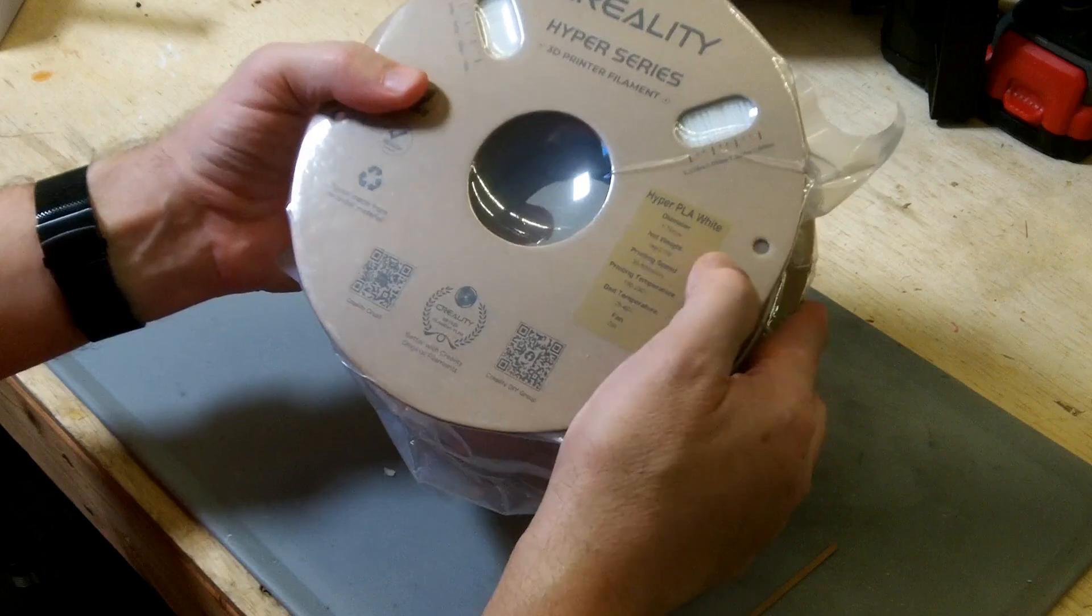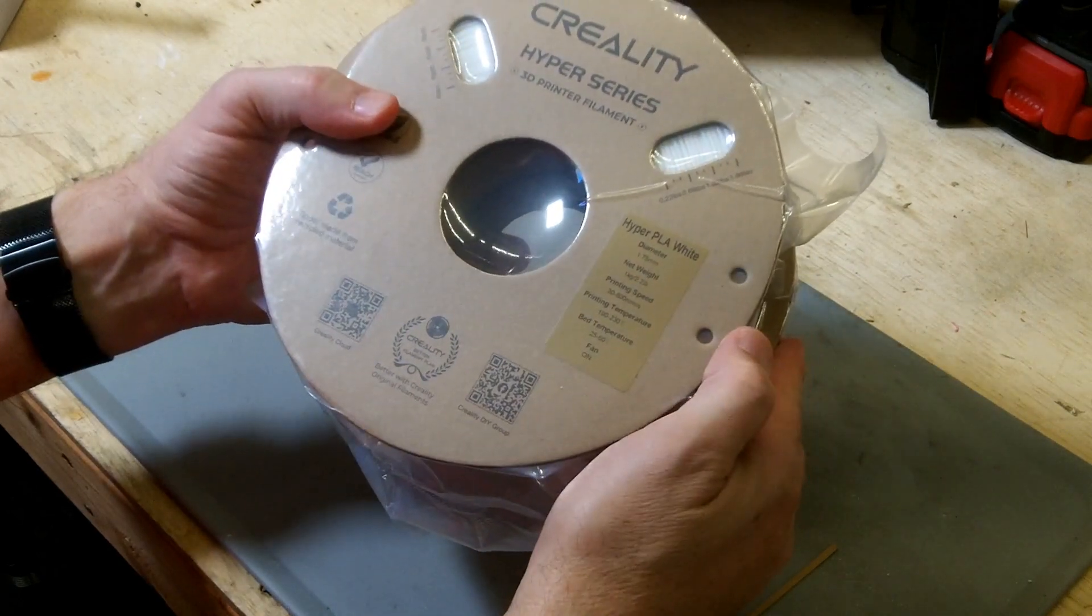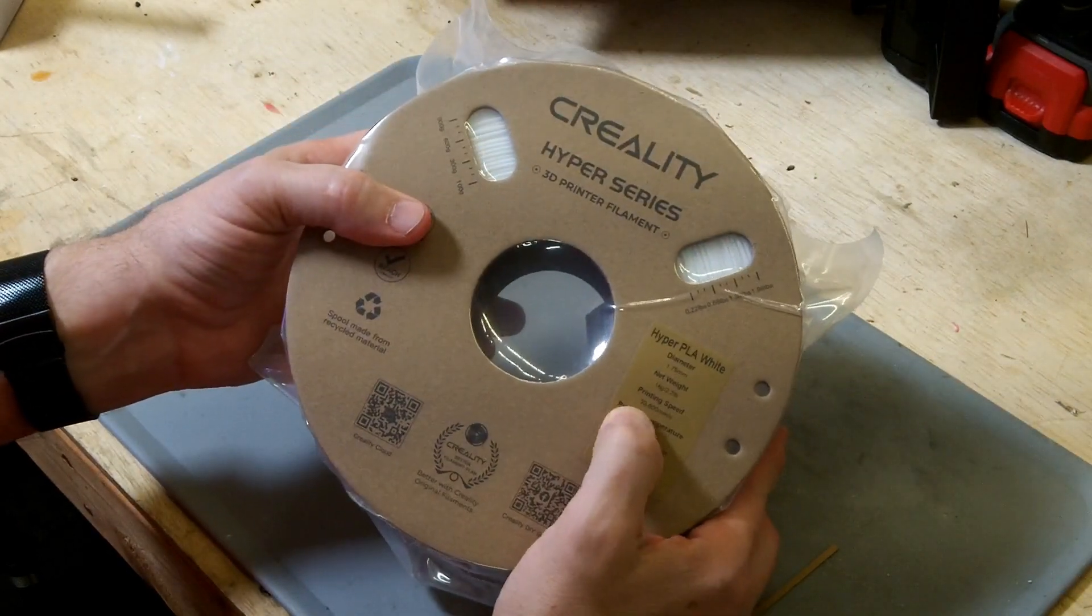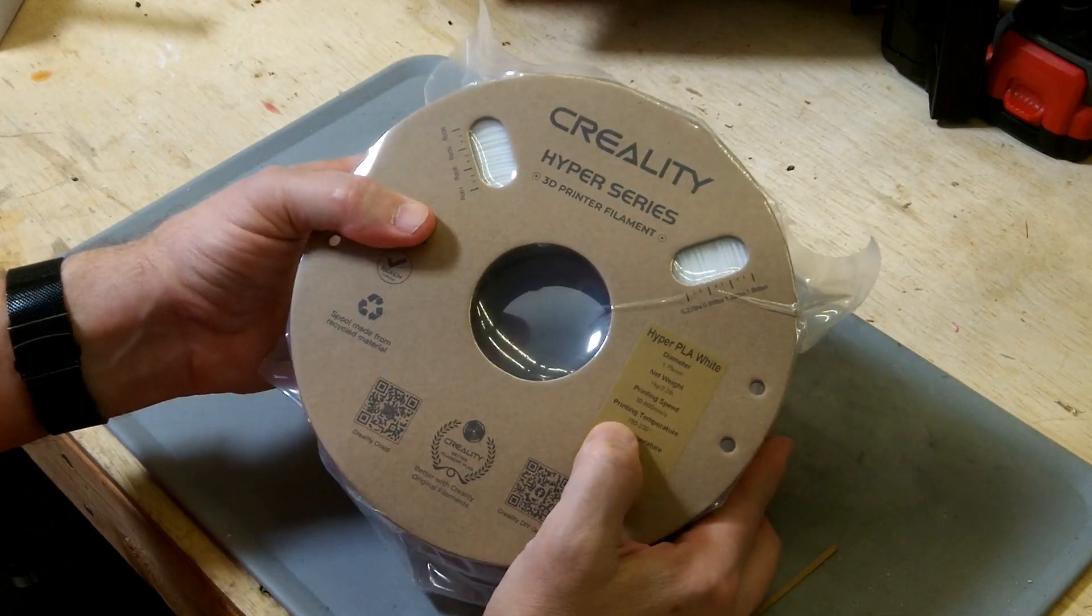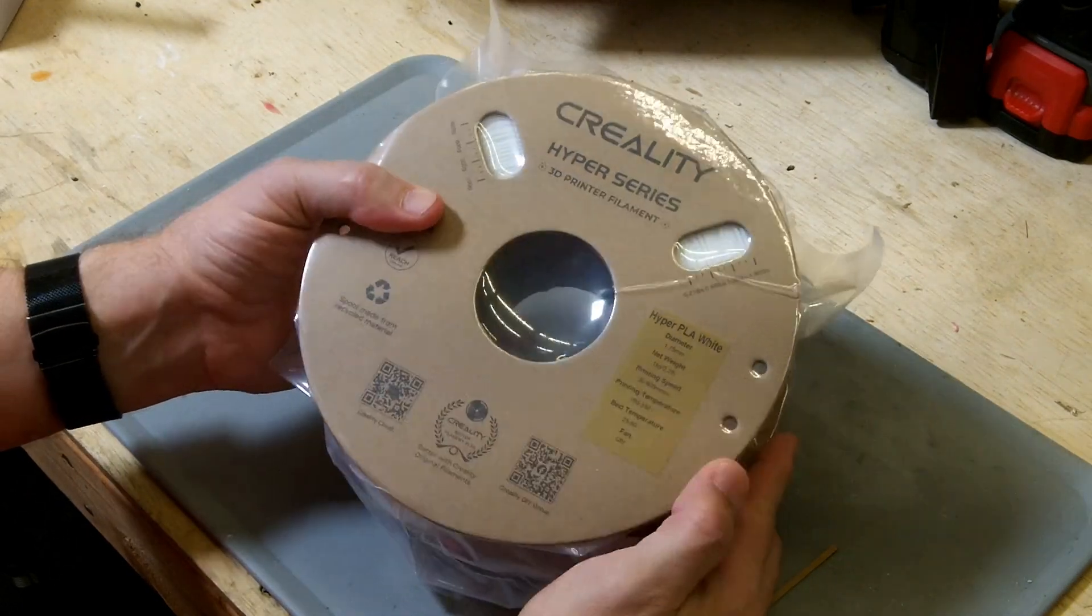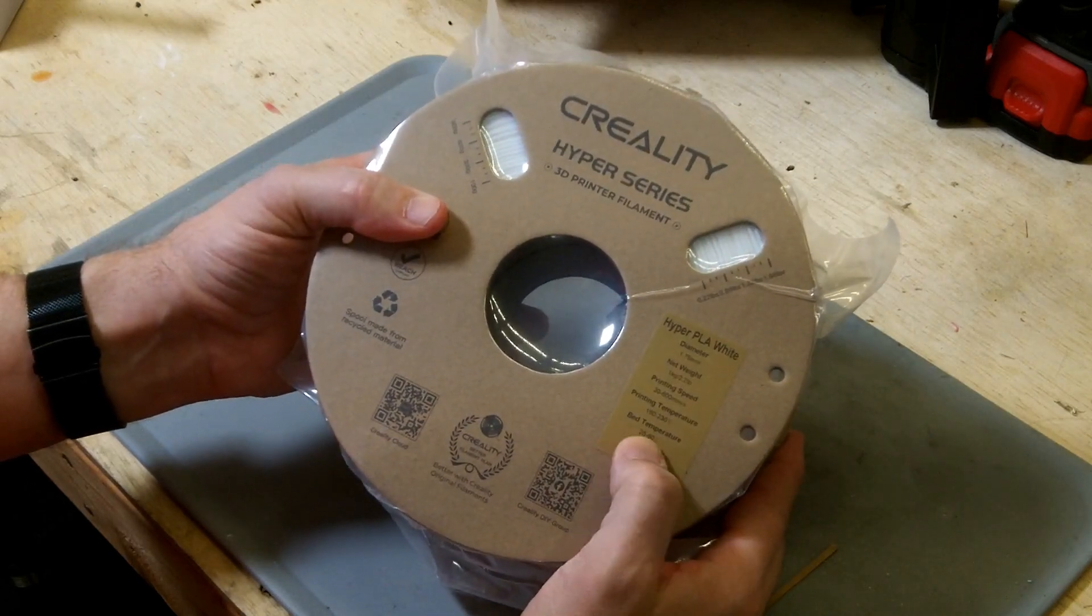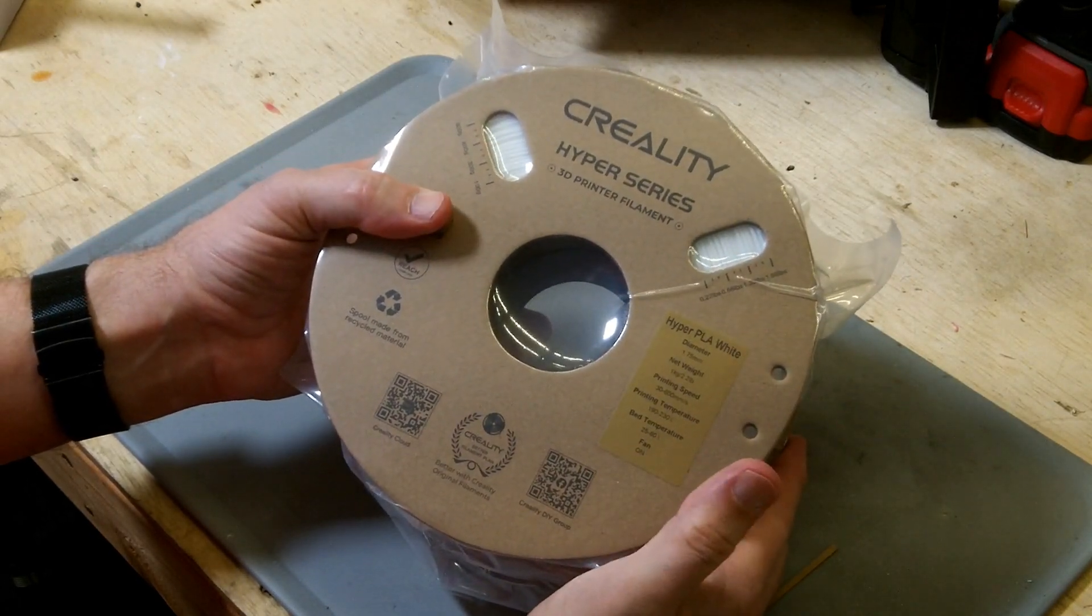Hyper White PLA, 1.75mm, net weight 1kg. Printing speed goes from 30 to 600mm a second. The recommended printing temperature is 190 to 230°C. Recommended bed temperature 25 to 60°C with the fan turned on.